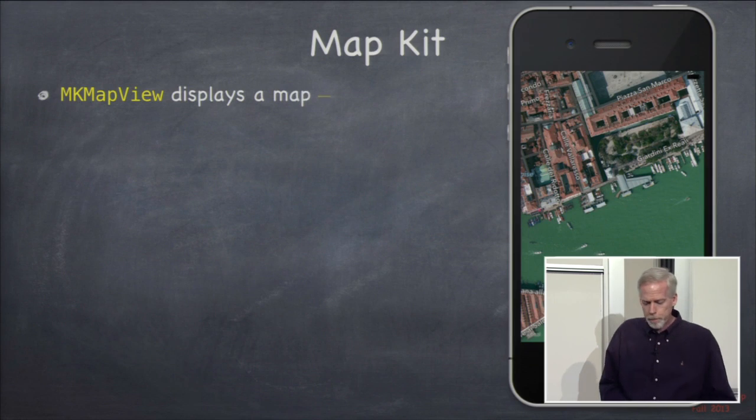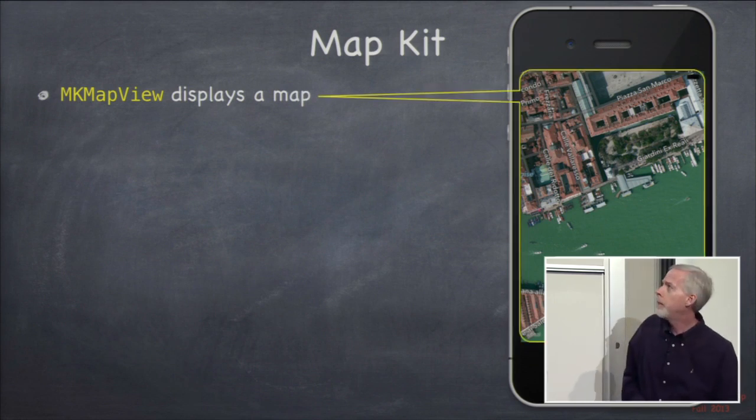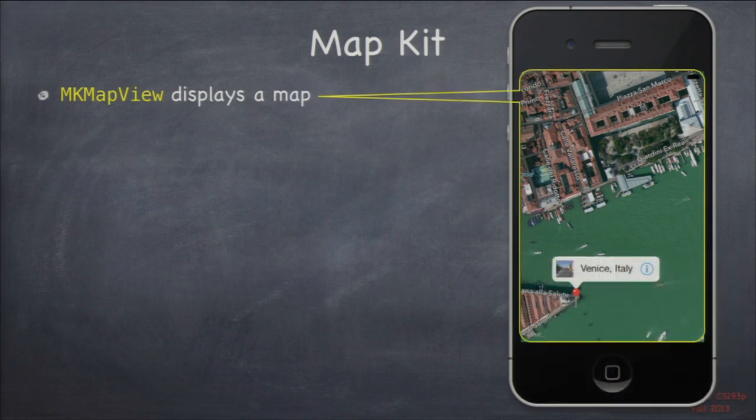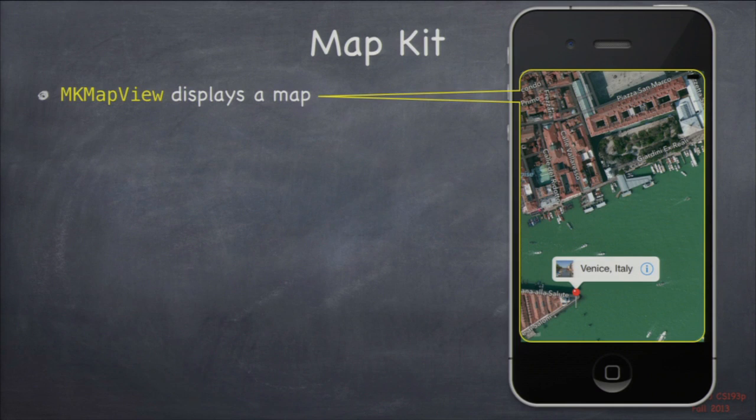Map kit is basically user interface for locations, and its primary class is this UIView called an MKMapView. The whole map view stuff is in a different framework called the Map Kit framework. When you want to use the Map Kit framework, you have to explicitly go into your project settings and set it to be linked. Otherwise, classes like MKMapView won't be there.